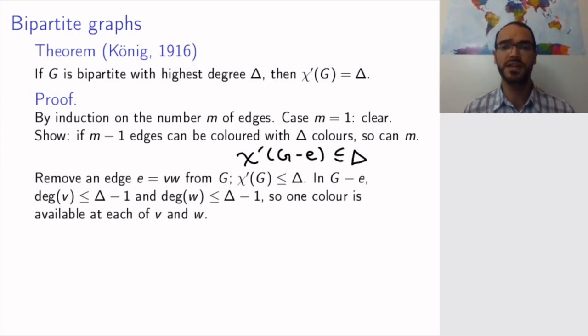We have removed an edge. So maybe the edge doesn't touch a highest degree vertex, then it remains Δ, or it decreases. For G-e, the induction hypothesis tells us that Δ colors are enough. Now we need to show that the same Δ colors are enough when we put the edge e back.